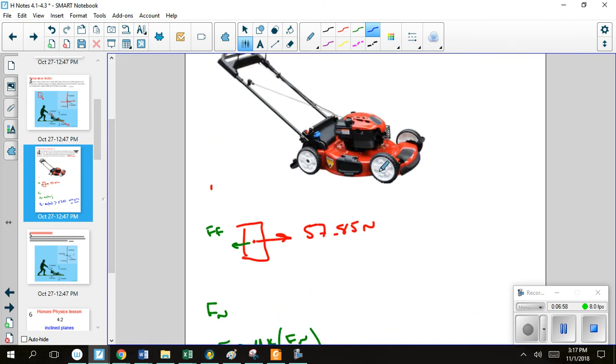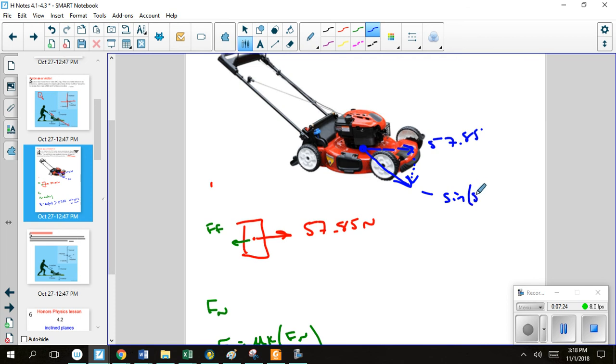And we already found our x component going this way, that was the 57.85. Now we need to figure out our y component which is going down. This is our negative f that we discussed. And this one is going to be the sine of our angle, which is 50 degrees times 90. And that gives us 68.94. Alright, but this isn't the normal force. This is just how much we are pushing down.